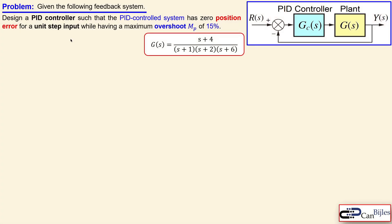Let's look at our example. We have the following feedback system given. You see the PID controller as a block and also the plant in cascade. The plant transfer function is a third order system and it has a zero at minus four. We must design a PID controller such that the system has zero position error for a unit step input and a maximum overshoot of 15 percent.